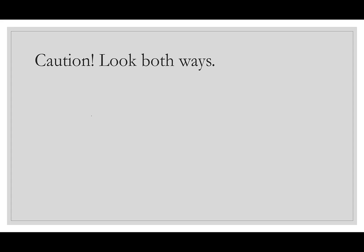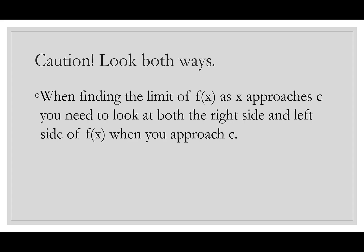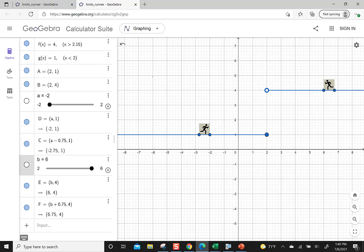The first caution is: look both ways — just like traffic. When we're finding the limit of f of x as x approaches c, you need to look to the right and the left to make sure we're getting the same value. Don't just look at the value of c and think you have your answer. Here's a graph we'll call f of x — on the left it looks like it's at 1, and on the right it looks like it's at 4, and where it's splitting is at 2.